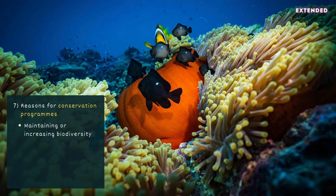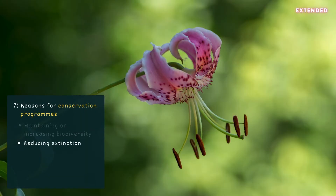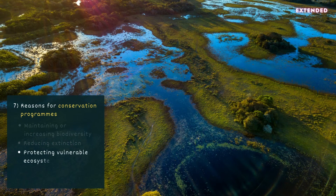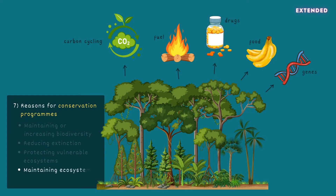The reasons for conservation programs include maintaining and increasing biodiversity, reducing extinction and the loss of potentially valuable genetic resources like plants with undiscovered medicinal properties, protecting vulnerable ecosystems upon which certain species of plants and animals exclusively depend, and maintaining ecosystem functions including nutrient cycling and the provision of resources. For example, a forest ecosystem cycles carbon and provides food, drugs, fuel, and genes.